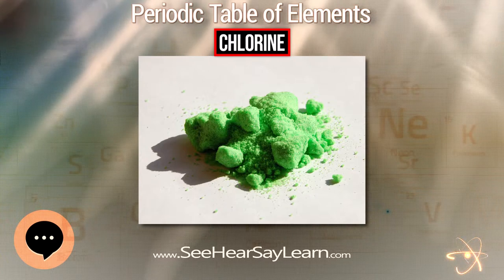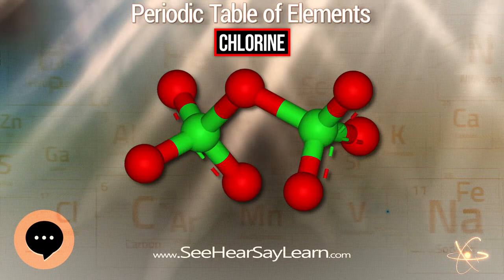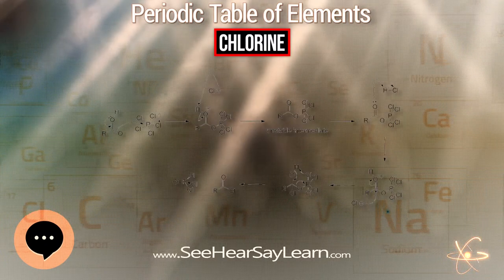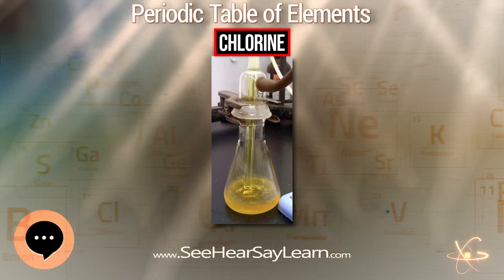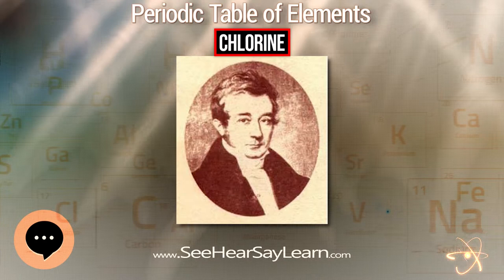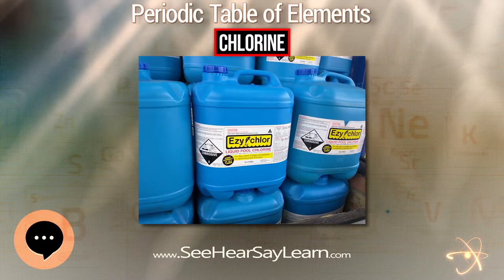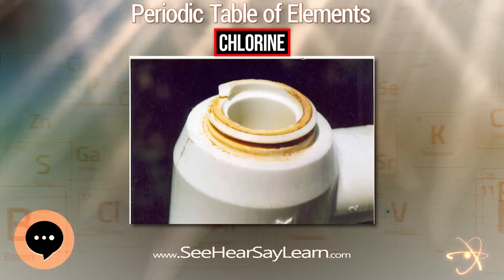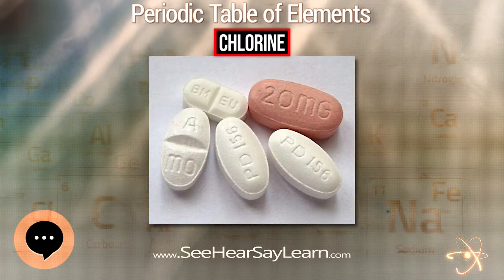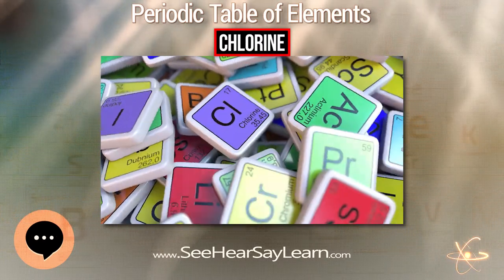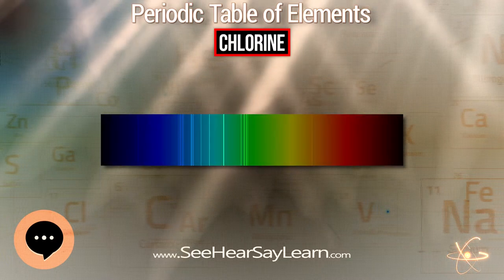Chlorine forms four oxo acids: hypochlorous acid, chlorous acid, chloric acid, and perchloric acid. Chlorine is much more stable towards disproportionation in acidic solutions than in alkaline solutions. The hypochlorite ions also disproportionate further to produce chloride and chlorate, but this reaction is quite slow at temperatures below 70°C despite the very favorable equilibrium constant of 10²⁷. The chloride ions may themselves disproportionate to form chloride and perchlorate, but this is still very slow even at 100°C despite an equilibrium constant of 10²⁰. The rates of reaction for the chlorine oxyanions increase as the oxidation state of chlorine decreases.